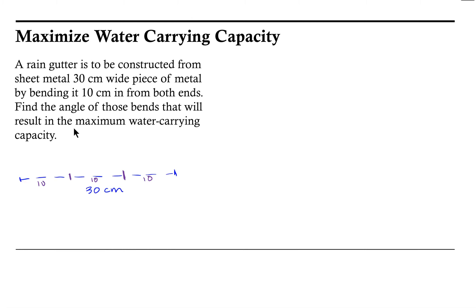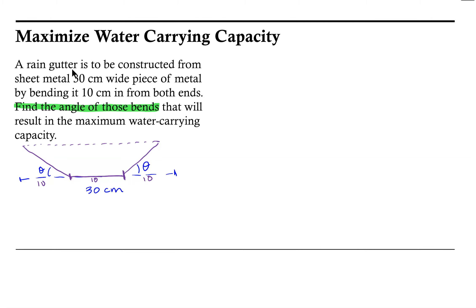We'll end up with something that looks like this where we bend up the left and the right sides, and our rain gutter looks something like this. We are asked to find the angle of those bends — we want to find this angle theta that we have to bend those sides that will maximize the water carrying capacity.